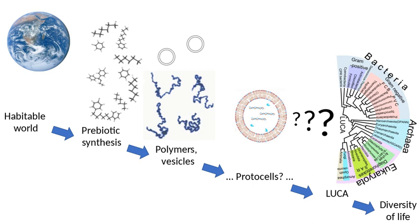Gold's theory is that the flow of food is due to outgassing of primordial methane from the Earth's mantle. More conventional explanations for the food supply of deep microbes away from sedimentary carbon compounds hold that the organisms subsist on hydrogen released by an interaction between water and reduced iron compounds in rocks.